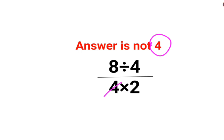A lot of people think that this 4 and 4 gets cancelled. So the answer is supposed to be 4. No, that is not how things work.